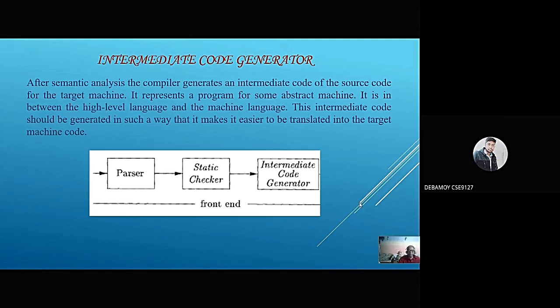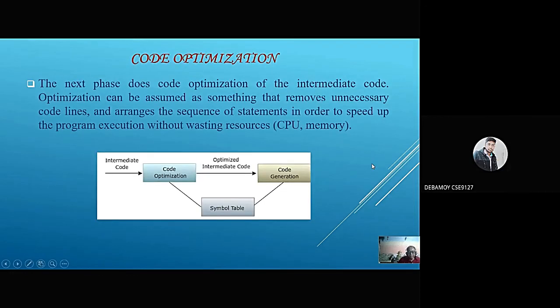The last phase of the synthesis analysis is code generation. In this phase, the code generator takes the optimized representation of the intermediate code and maps it to the target machine language. The code generator translates the intermediate code into a sequence of relocatable machine code. The sequence of instructions of machine code performs the task as the intermediate code would do.